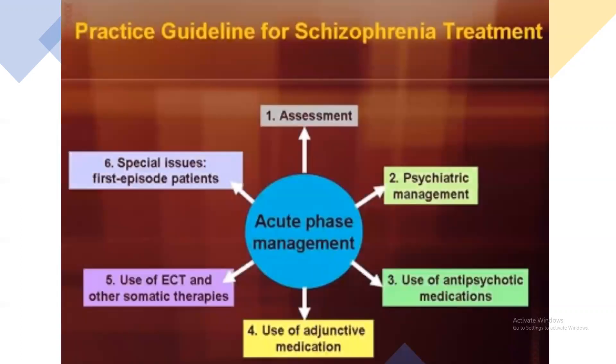There are practice guidelines for schizophrenia treatment. Acute phase management includes six steps: assessment, psychiatric management, antipsychotic medication if not cured, adding additional medications, use of ECT and somatic therapies, and addressing special issues. After this, patients become first episode patients.